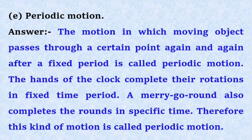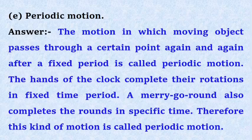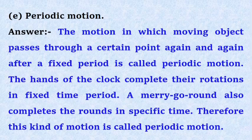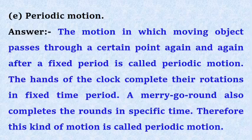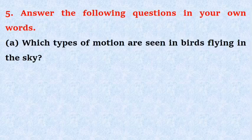The hands of the clock complete their rotations in fixed time period. A merry-go-round also completes the rounds in specific time. Therefore, this kind of motion is called periodic motion.